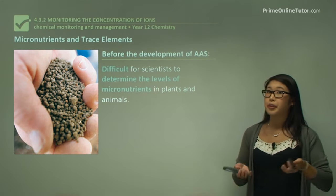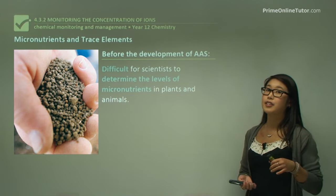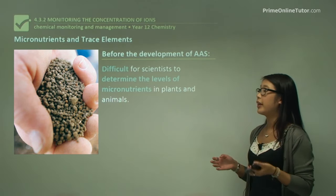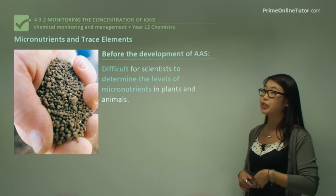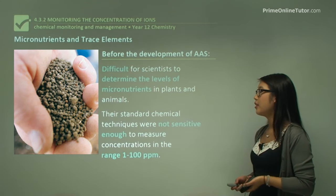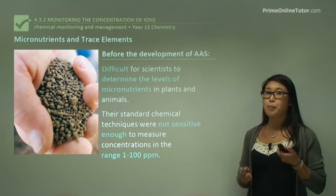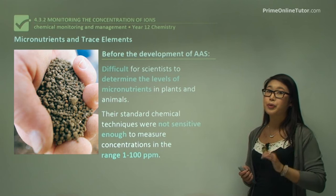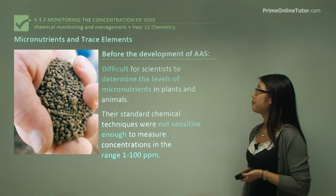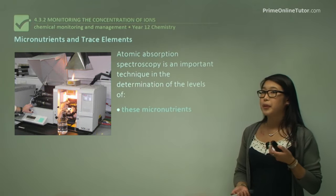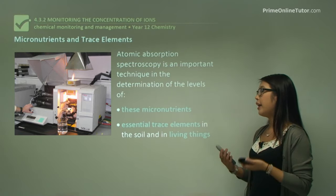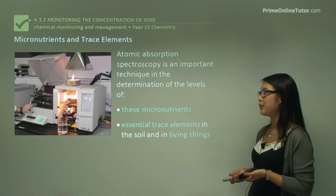Before the development of AAS, it was really difficult for scientists to accurately determine how much of an ion was in a sample. We couldn't look at micronutrients in plants and animals or trace elements because the techniques at the time were not sensitive enough. We only had chemical techniques before 1950, and these were not sensitive enough to look at concentrations in the range of 1 to 100 parts per million. AAS is important because it allows us to determine the levels of micronutrients in plants and animals, and essential trace elements in the soil and living things.